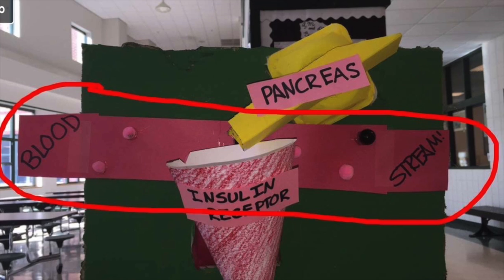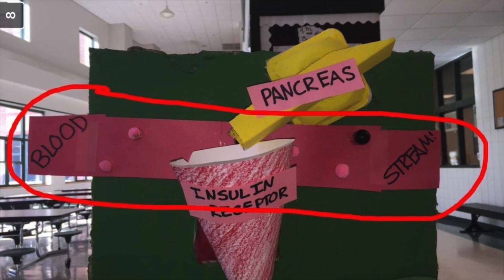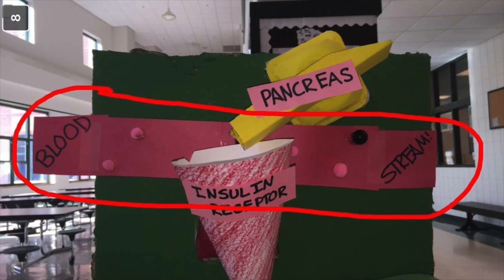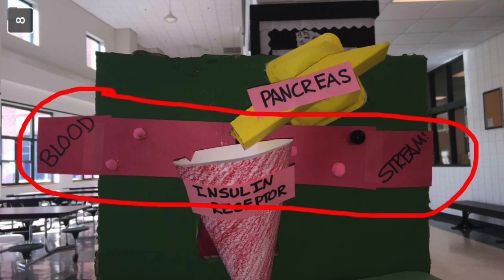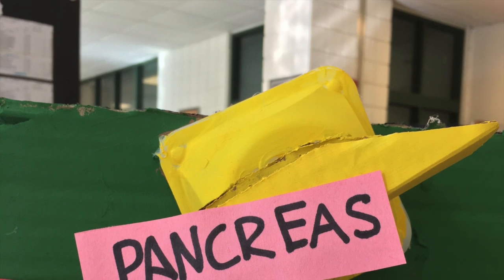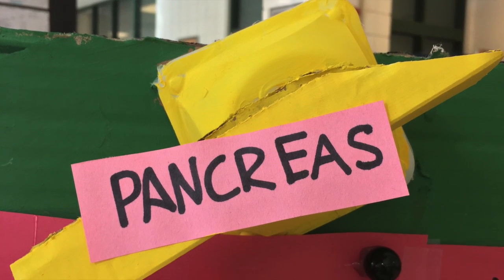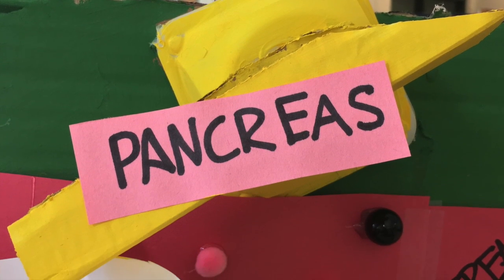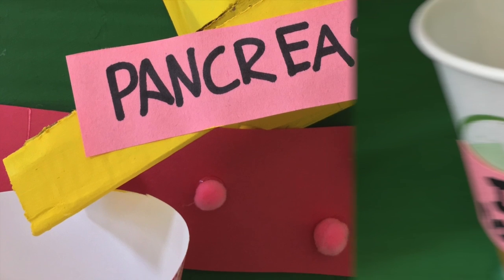Then, these glucose molecules pass through the lining of your stomach and get absorbed into your bloodstream, where high levels of blood sugar signal the beta cells in the pancreas to secrete the protein insulin.